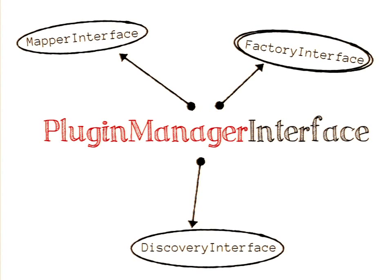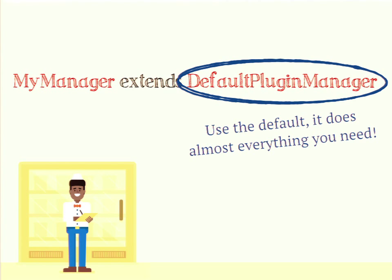If you want to create a new plugin type, you implement the plugin manager interface and it'll set up all of those defaults for you. My recommendation would be to do so by extending DefaultPluginManager — it tries to be smart about knowing which discovery mechanism to use, which factory to use, and which plugin mapper to use. This is how annotations are the default and container factory is the default: if you extend DefaultPluginManager it assumes you want annotated class discovery and the container factory. What's awesome about extending DefaultPluginManager is that you can create a new plugin type with about 10 lines of code.